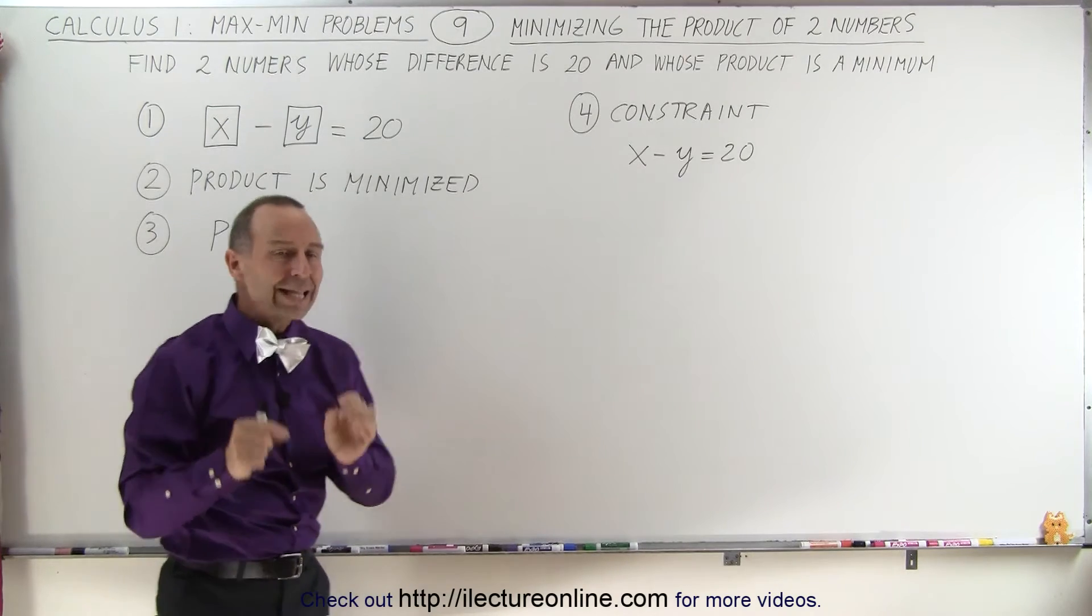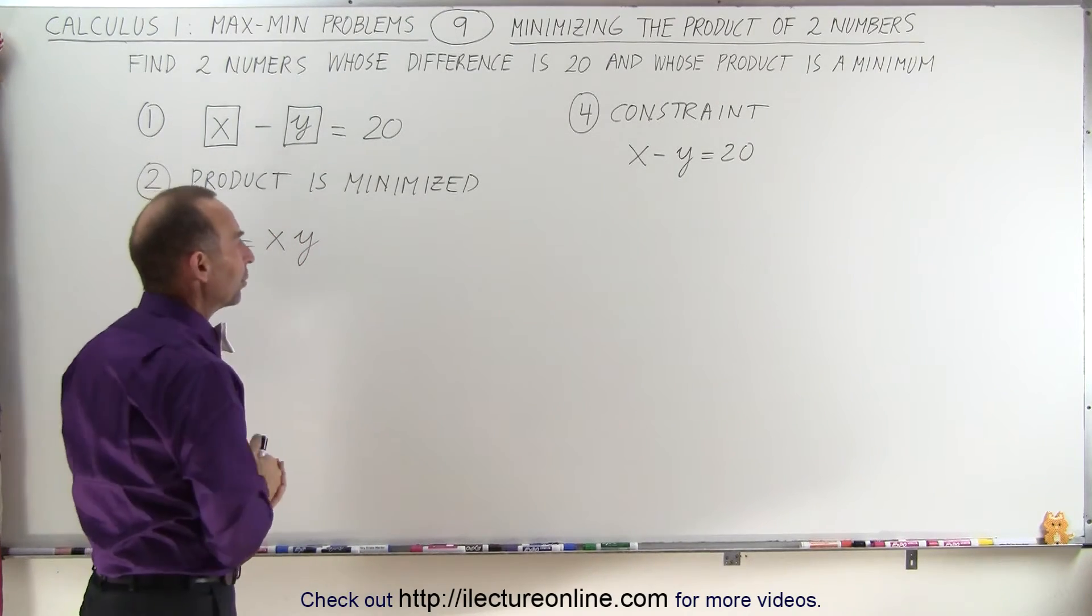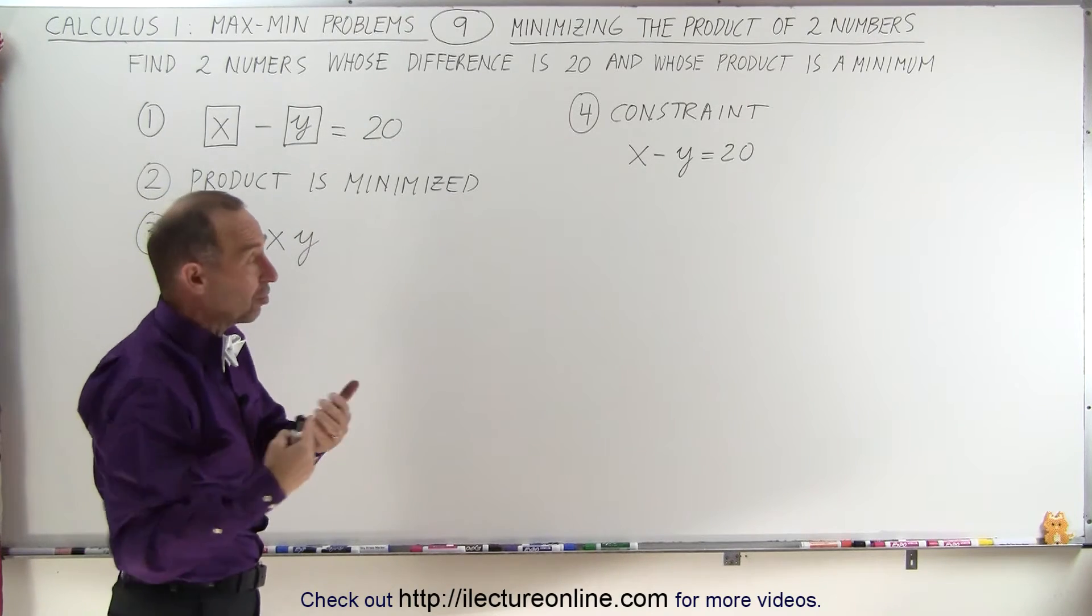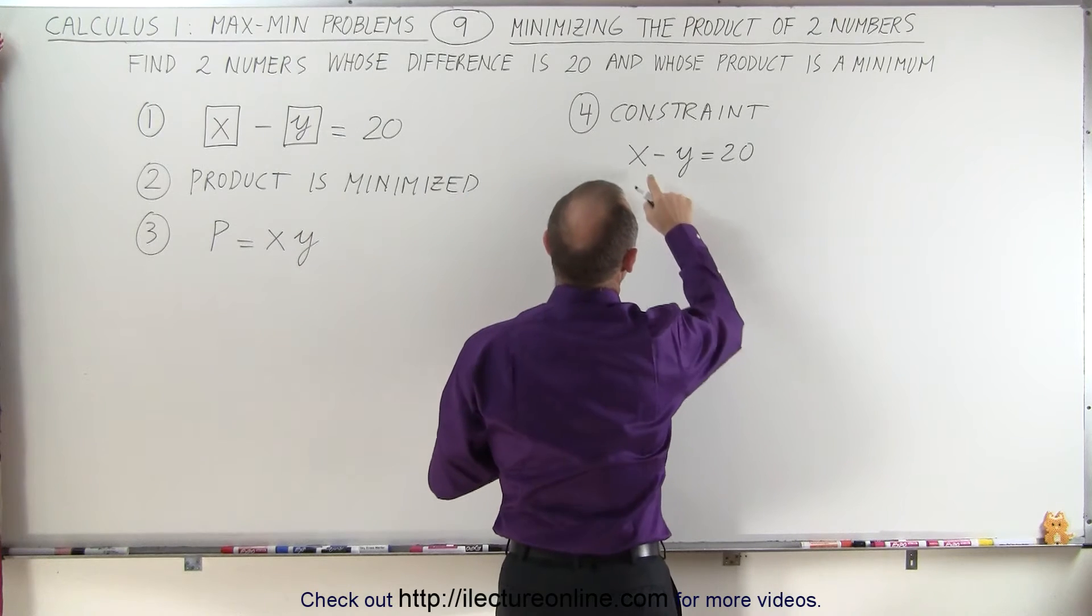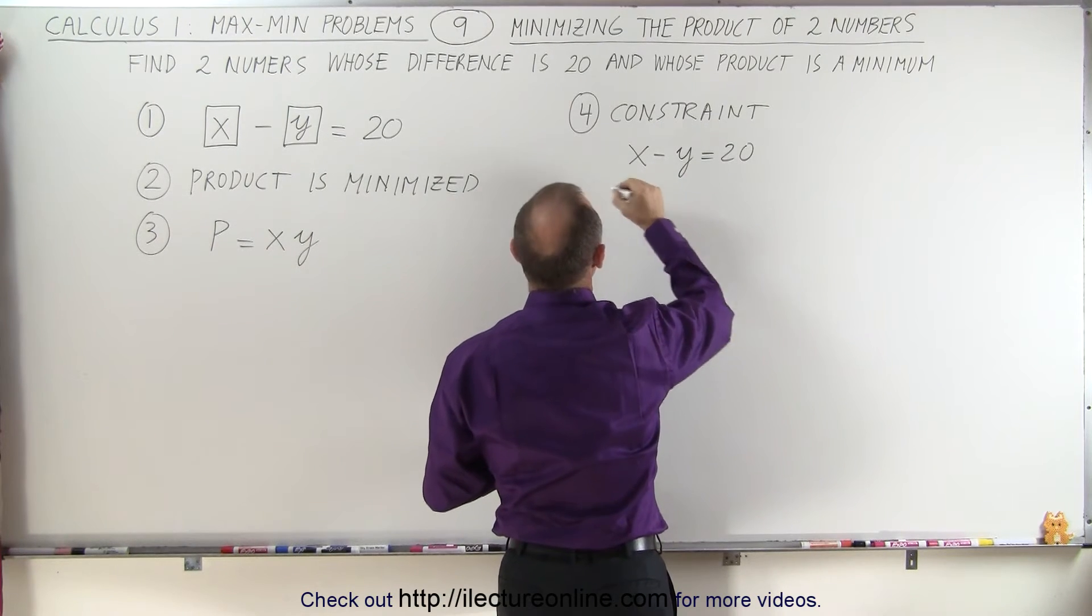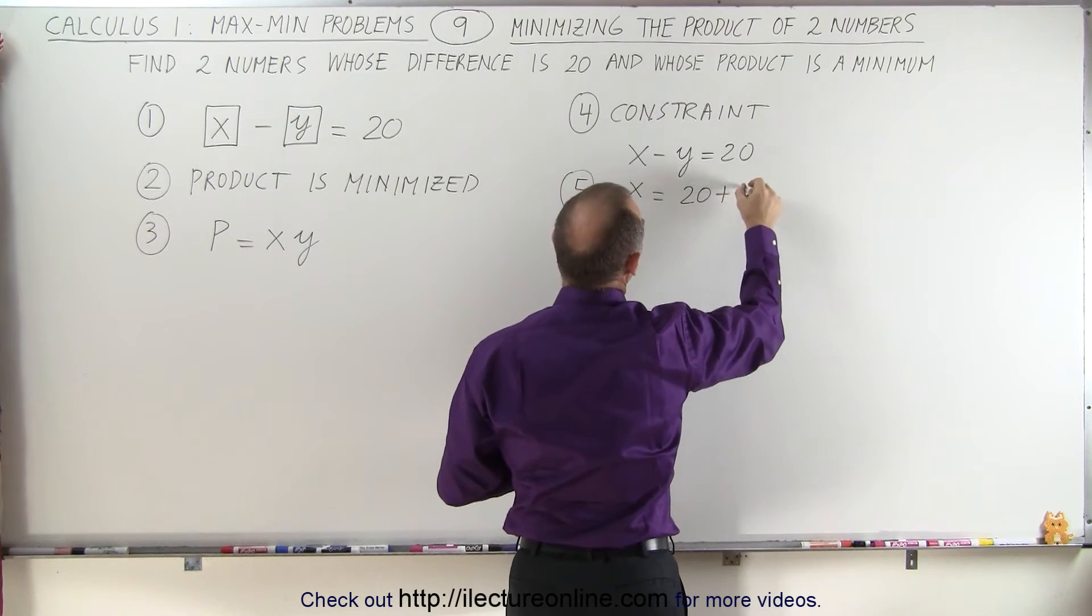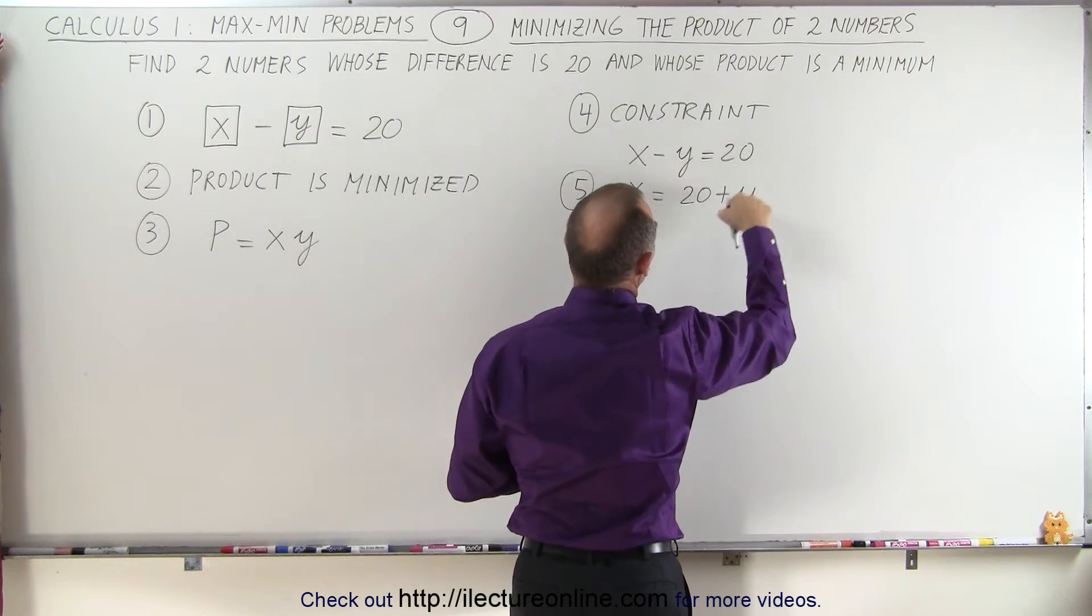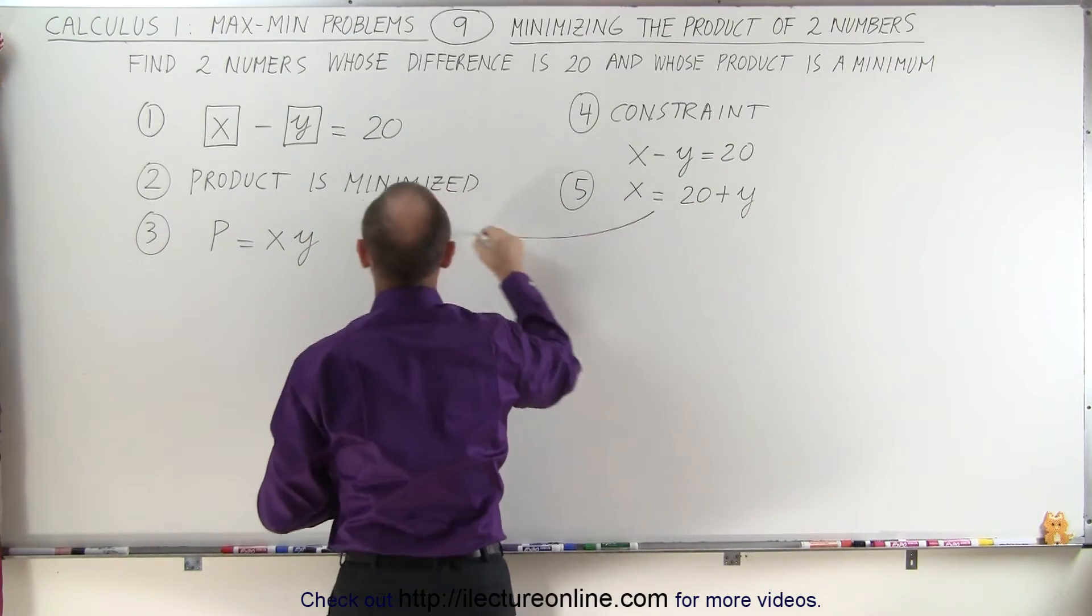The next step, we take the constraint and use it to eliminate all but one of the variables. In this case, since there's only two, we need to just eliminate one of the variables, which means we can solve this for X. We can say that X, that's step five now, X is equal to 20 plus Y. When we move the Y to the other side, it becomes positive. And then we substitute that into the equation over here for X.